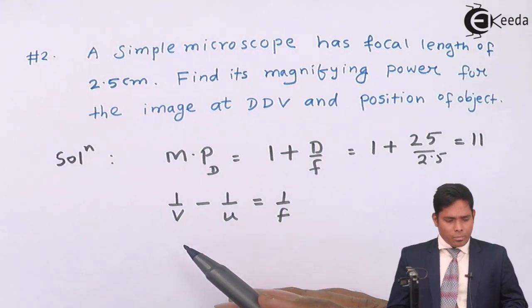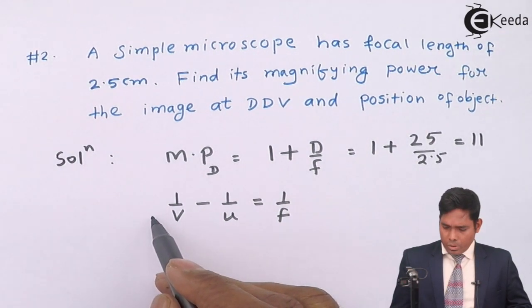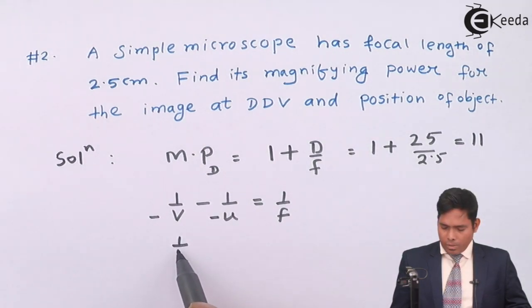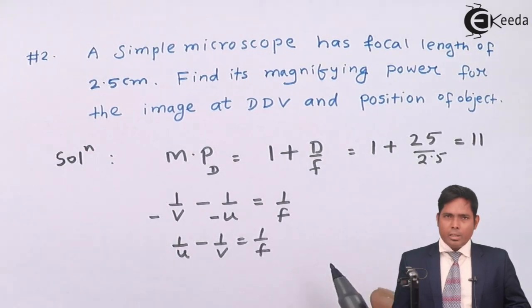So, I'll put negative. And this is 1 by V. So, this is 1 by U minus 1 by V. So, I'll put negative here. So, this becomes positive. So, it is 1 by U minus 1 by V equals to 1 by F with proper sign conventions.